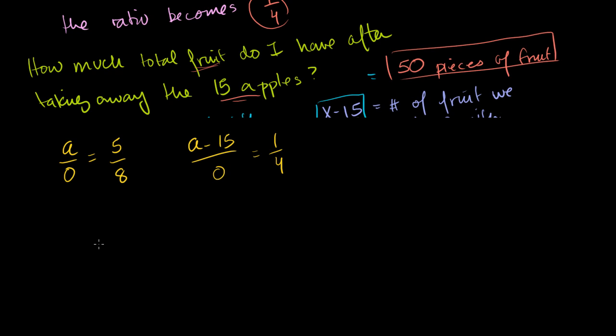Let's see if we can solve this. If we cross-multiply both sides of this equation, we get 8A equals 5O. Or if we subtract 5O from both sides, we get 8A minus 5O is equal to 0.